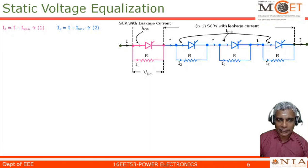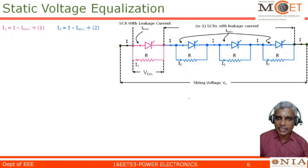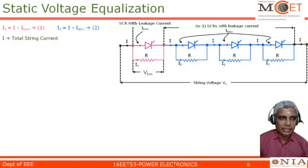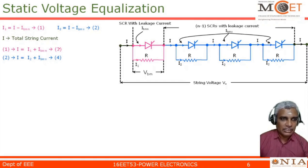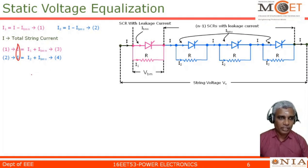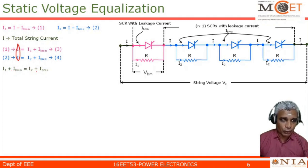The string current I enters, splits into IBMN and I1, recombines to I, then splits into IBMX and I2, and finally comes out as total I. The total string voltage is Vs, and I is the total string current. From equation 1: I equals I1 plus IBMN. From equation 2: I equals I2 plus IBMX. These are equations 3 and 4, and since both left-hand sides equal I, we can equate them: I1 plus IBMN equals I2 plus IBMX.